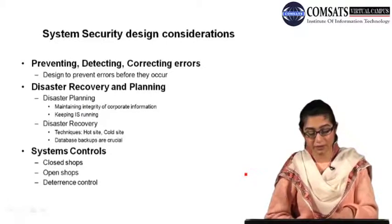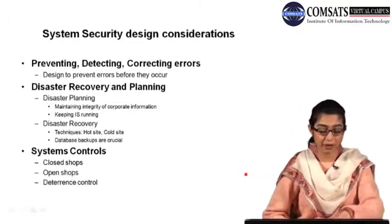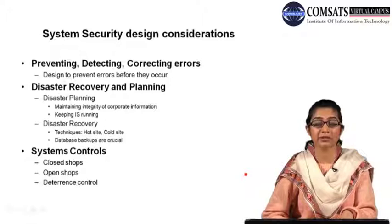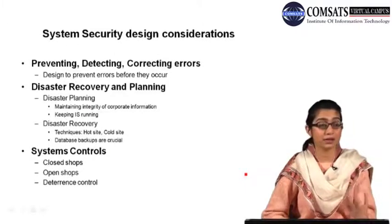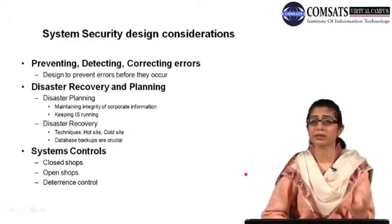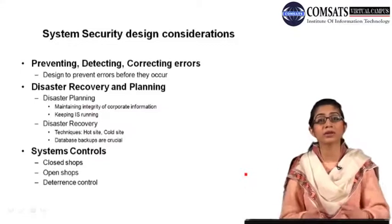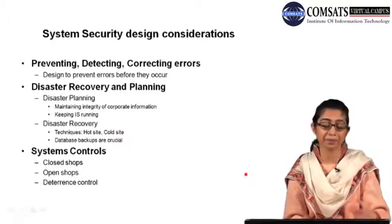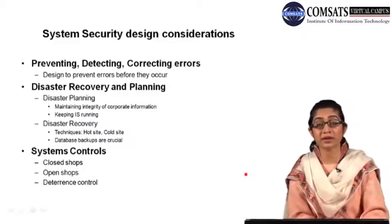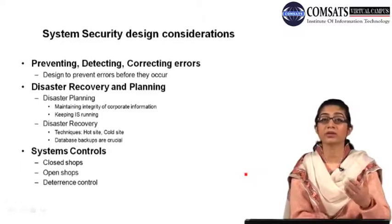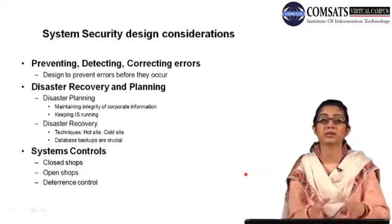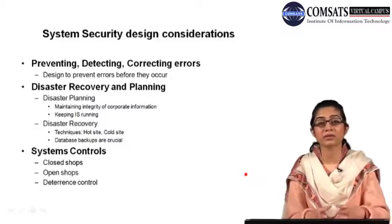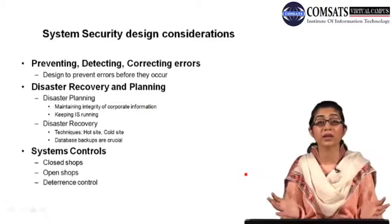So far we have talked about different design issues: logical design, physical design, the two basic categories of interface design and security design — how users interact with the system and how the system is made secure against natural or deliberate problems. Systems need to be designed to prevent, detect, and control these disasters.